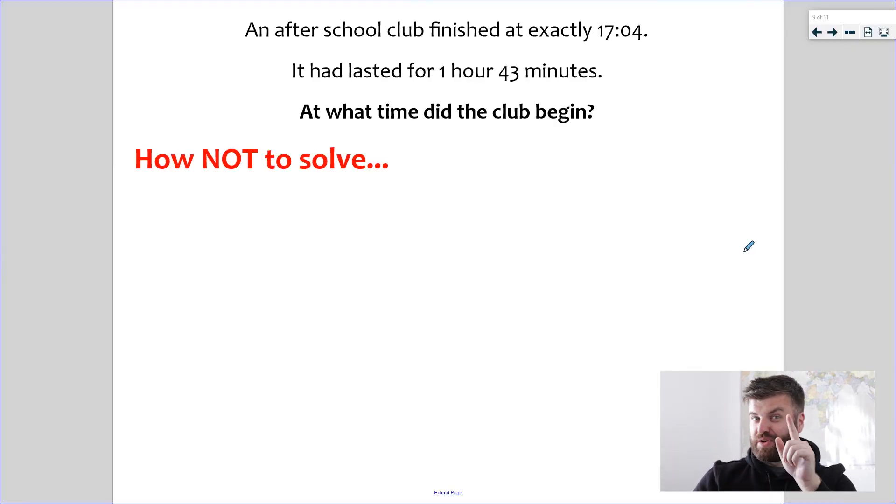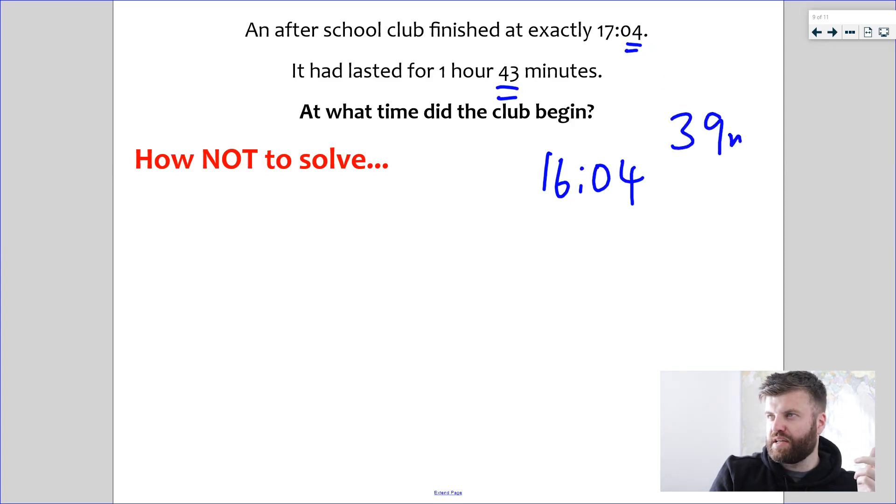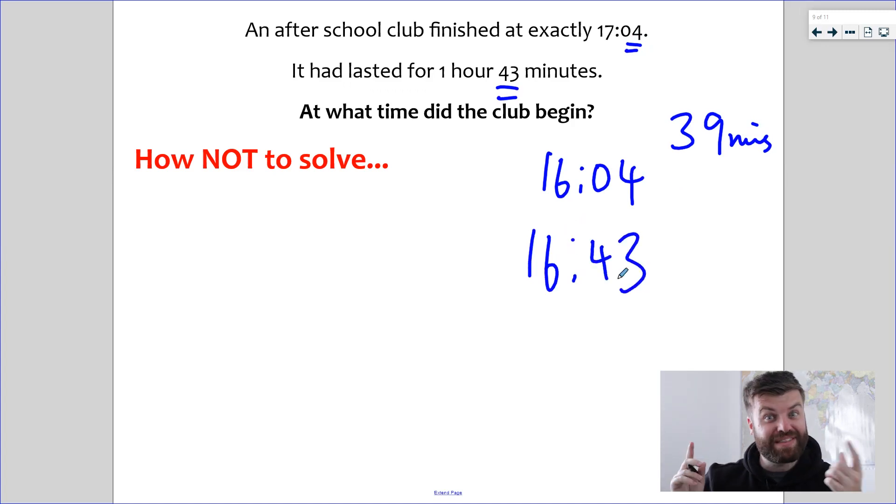Example number three, the final one before you have a go yourself. Now this is how not to do it. If I don't use the timeline, I try and do it in my head. I've got an after school club finished at 17:04. It lasted for an hour and 43. When did the club begin? Well, if I'm doing it quickly without writing it down, I might take the hour off. So I'm at 16:04. That's good. And then I see 43 minutes and four minutes. I'm going to find a difference, which would obviously be 39 minutes, right? So I can take off 39 and put it on and get 16:43 was when the club must have started. No, absolute mess. Don't try and do it in your head. You know what you've got to do. You've got to do a timeline.